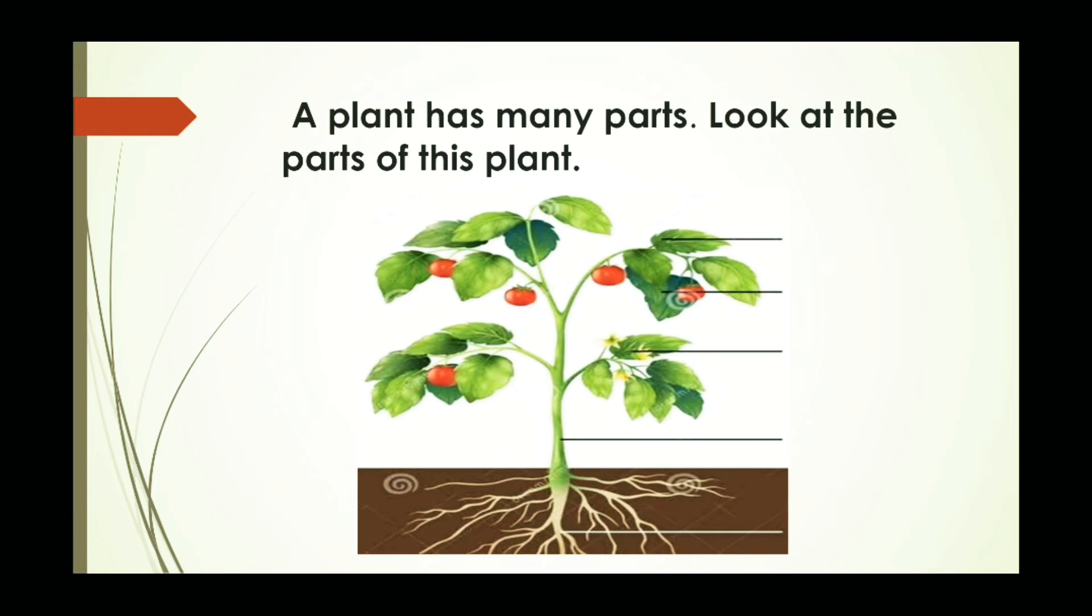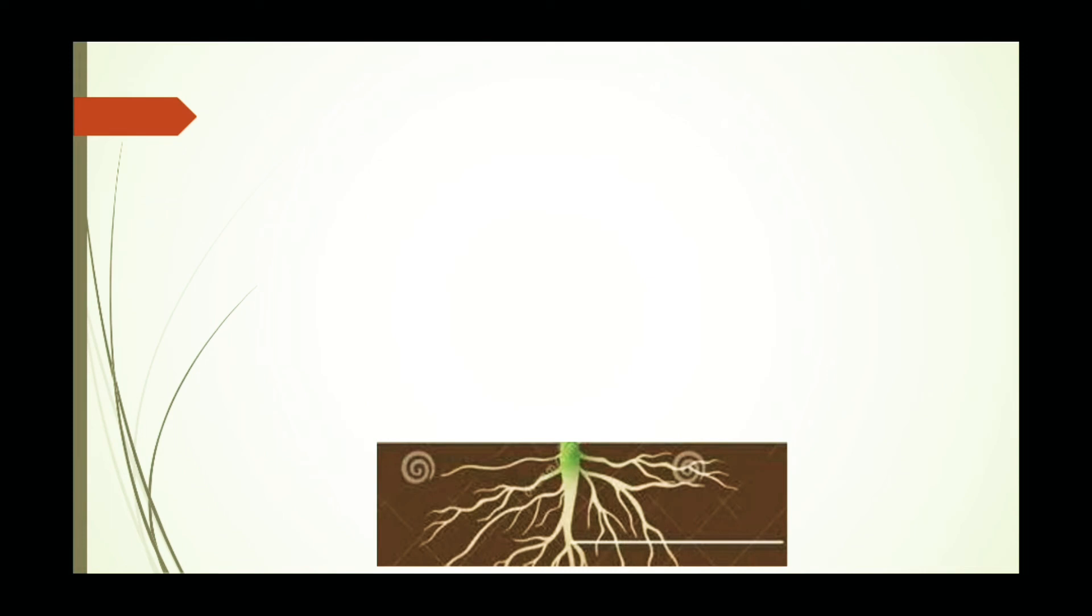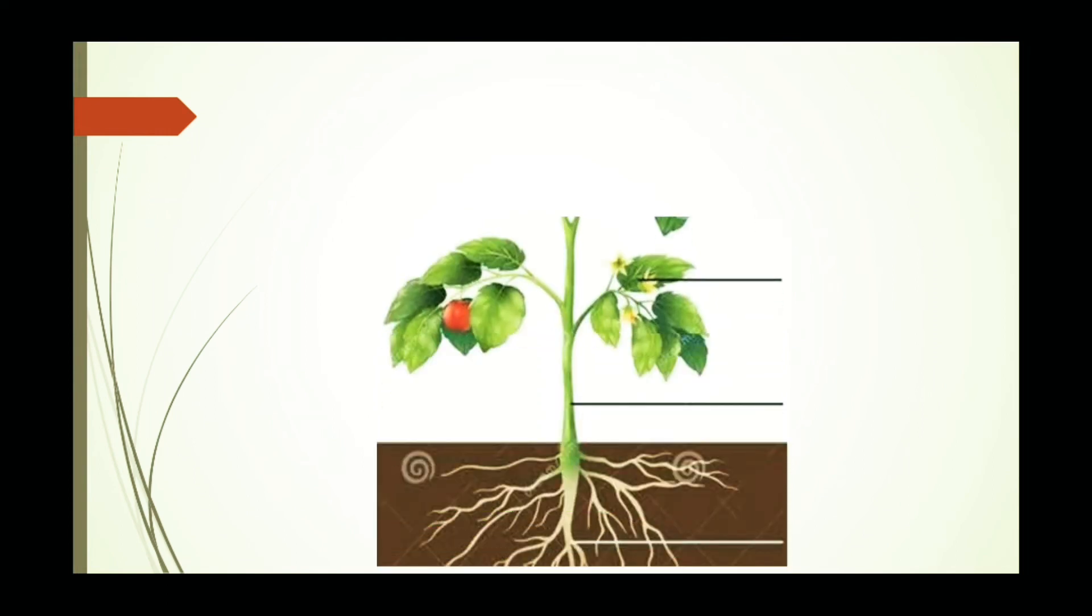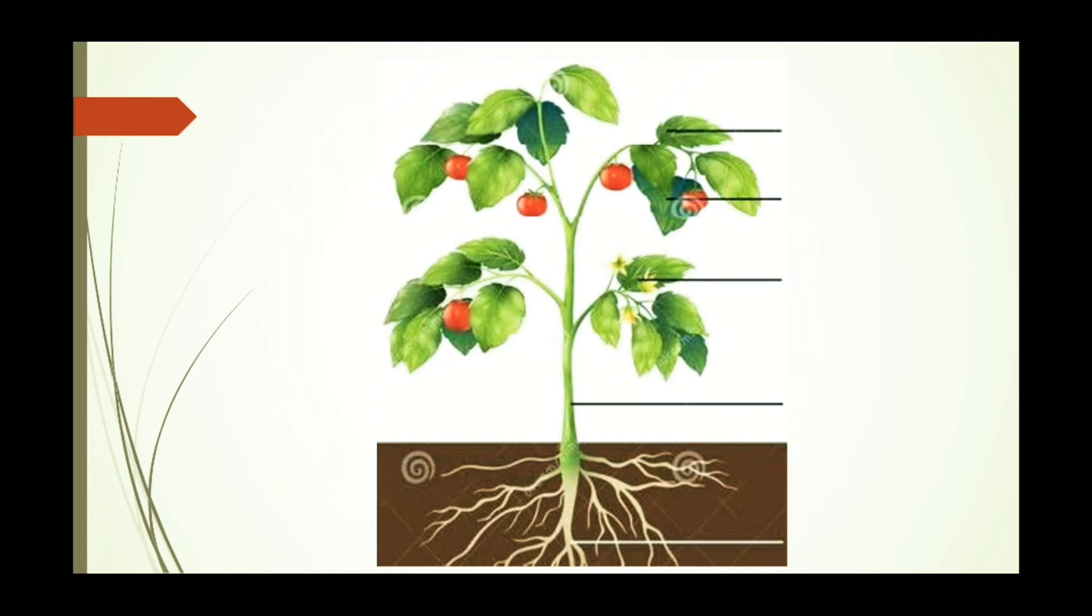A plant has many parts. Look at the parts of this plant. Now what is this? Tell me what is this? Can you find what is this? This is root. Very good. And this is stem. Yes. And this one is flower. Very good. And this is fruit. Fruit. And at the top, this is leaf. Leaf.